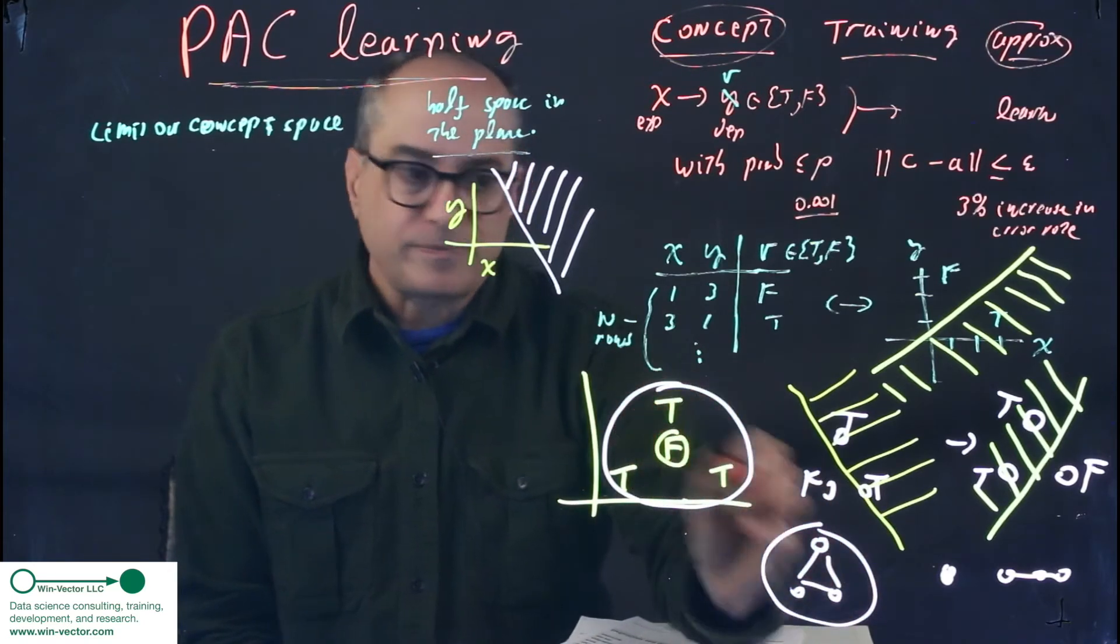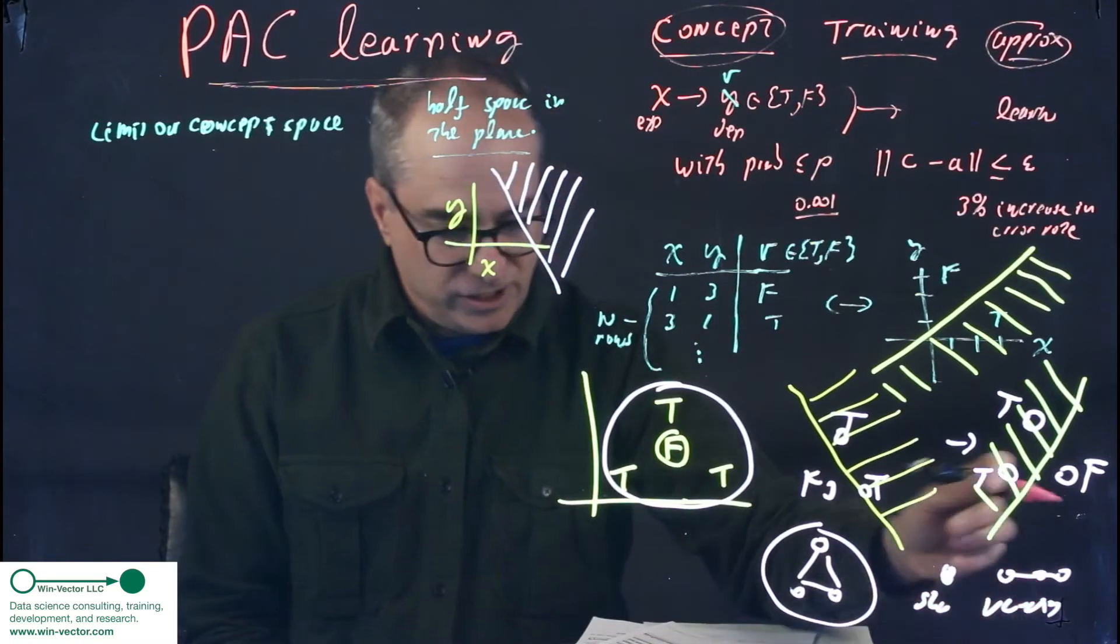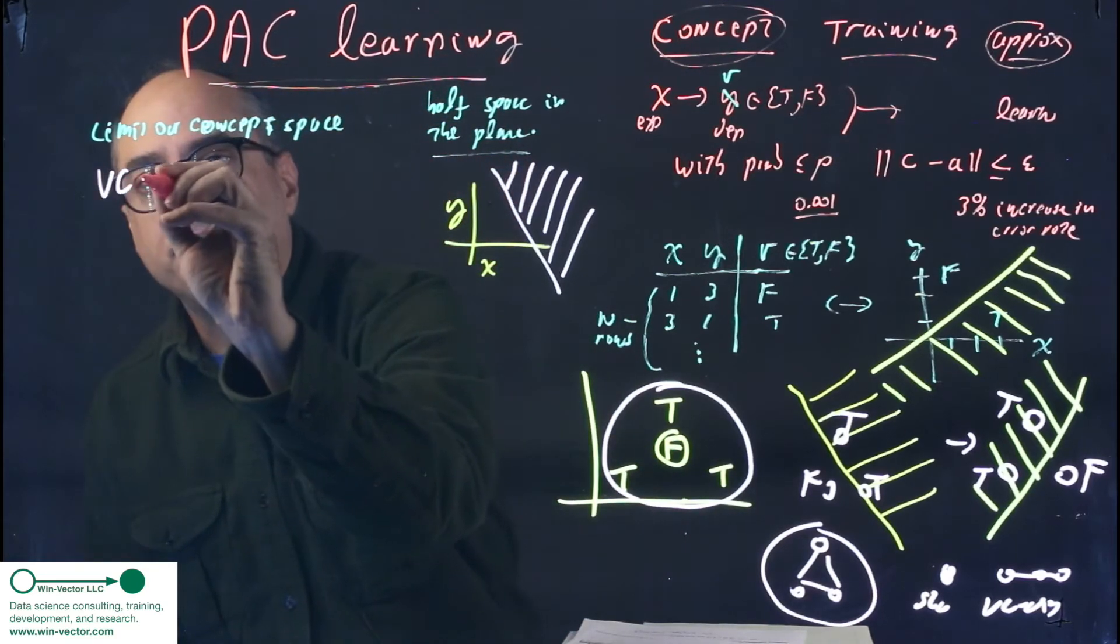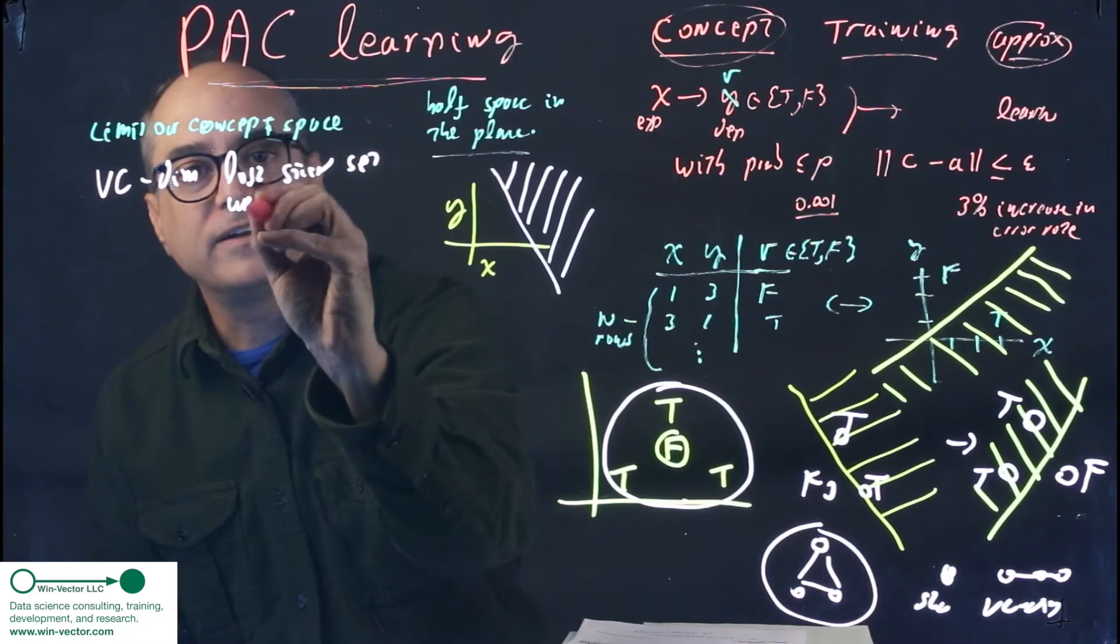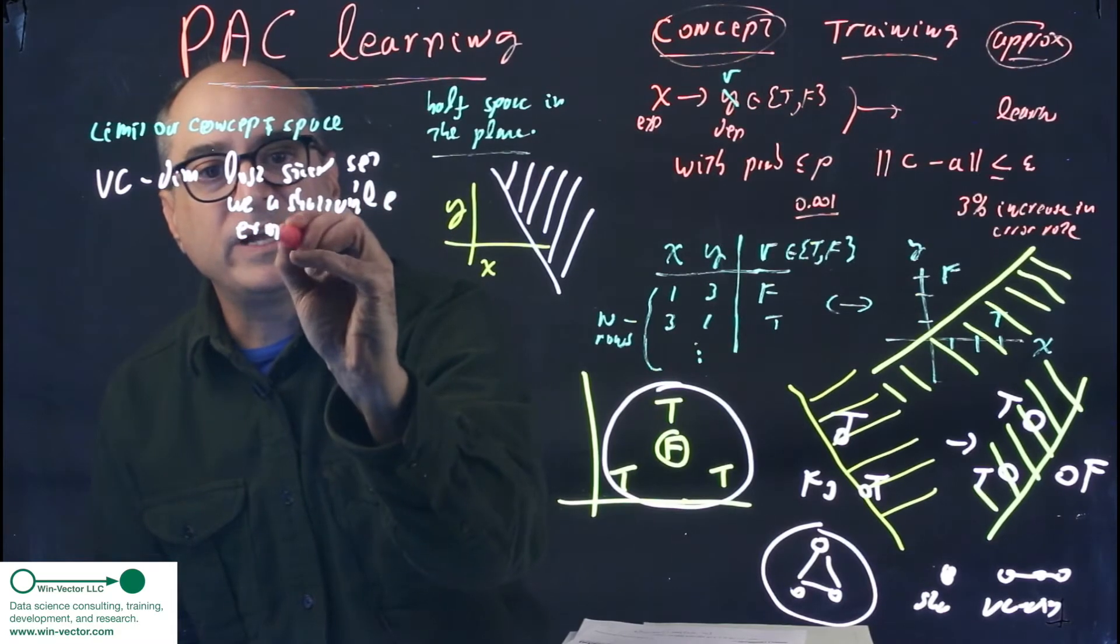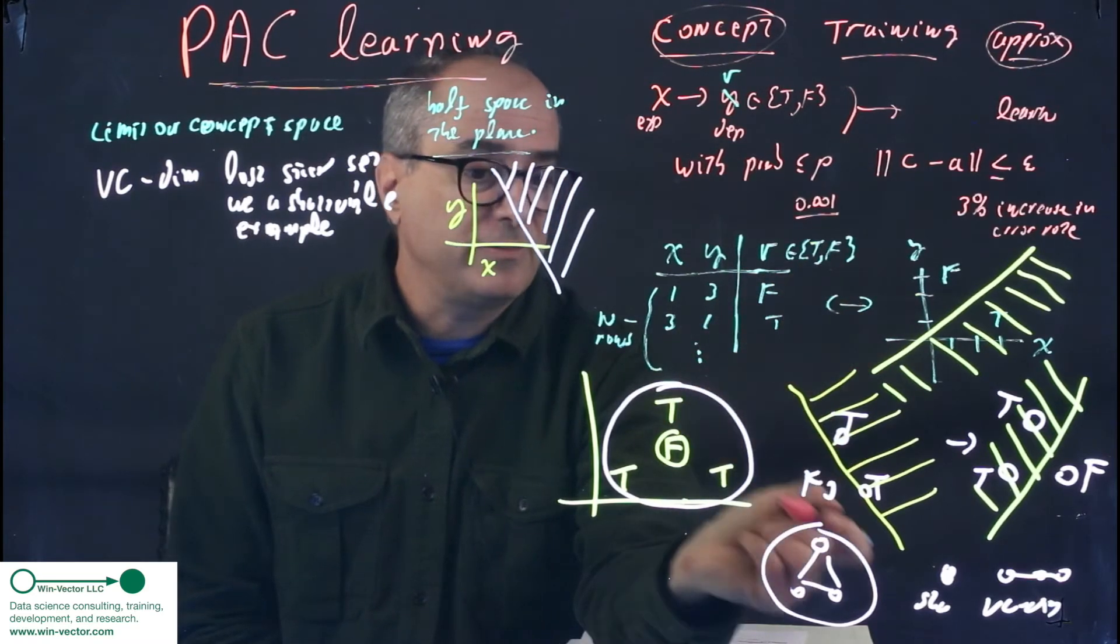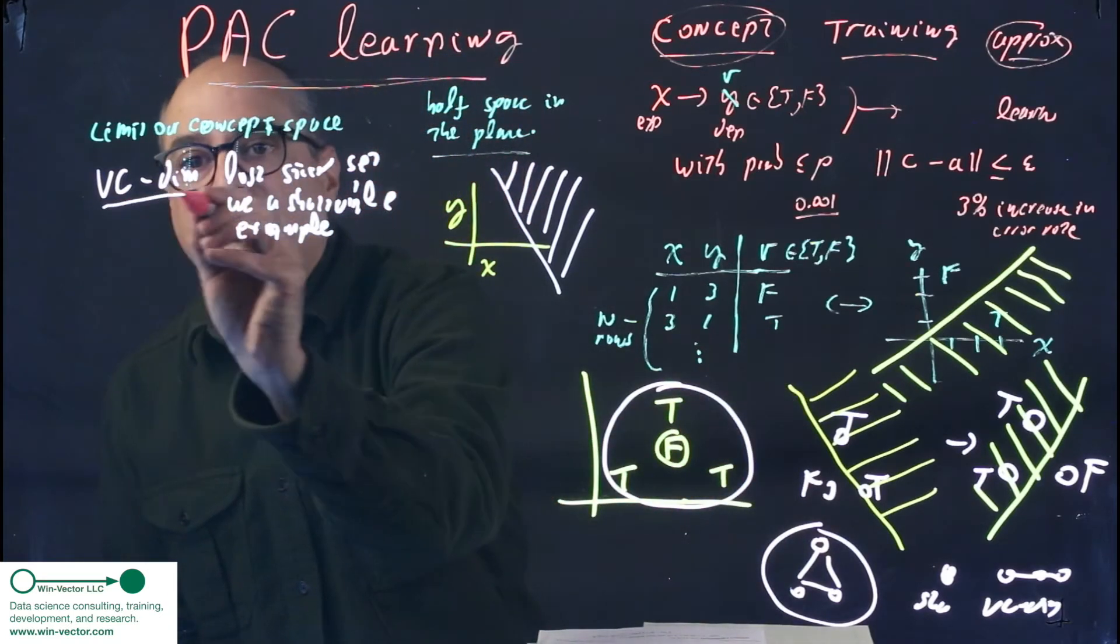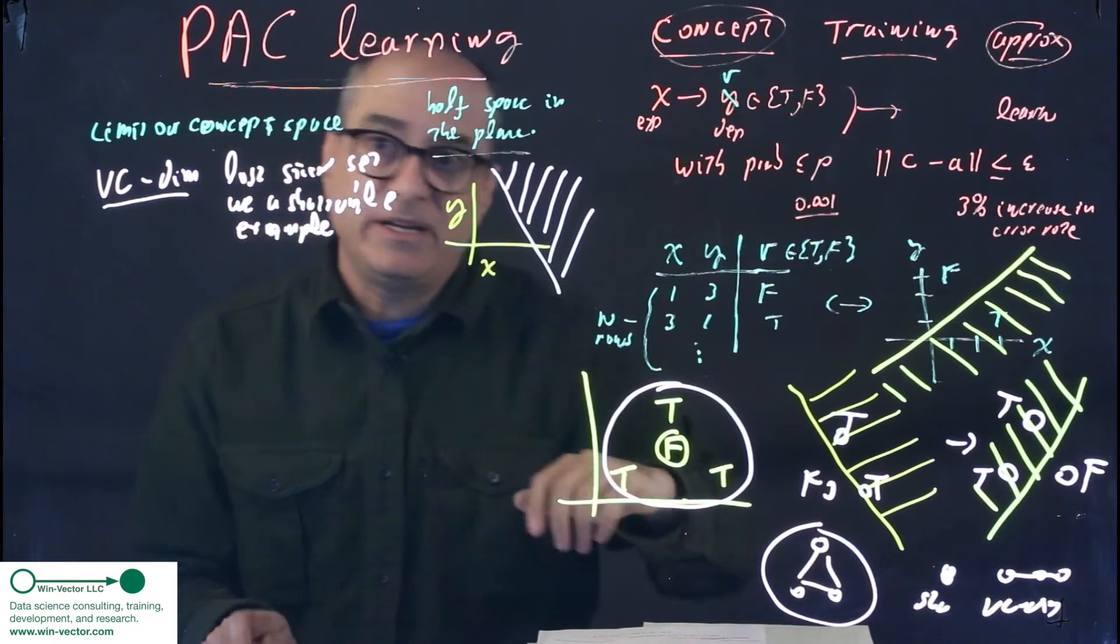But the last size that is shatterable is the VC dimension, by definition. And that is named after Vladimir Vapnik and Alexei Chervonenkis. So VC-dim, last-sized set, we can find a shatterable example. If we can shatter arbitrarily large sets, we call it an infinite dimensional VC space. Like if our concept was nearest neighbor, that has infinite dimension, even in the plane. So VC-dim is last-sized set we can shatter. It's basically a numeric or quantitative representation of how limited is our concept space.